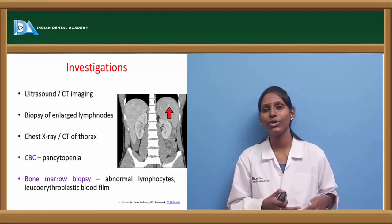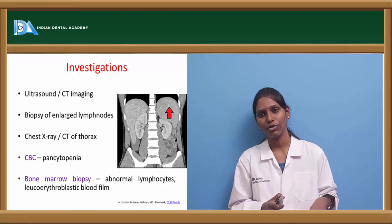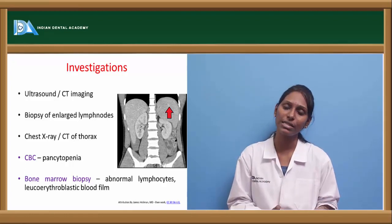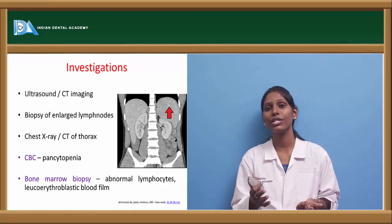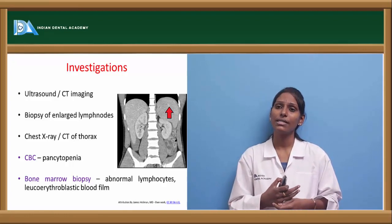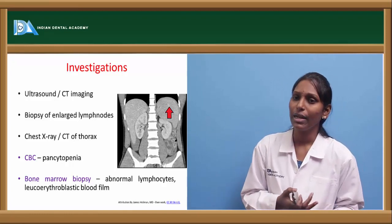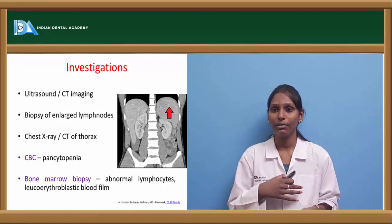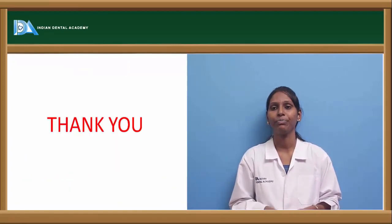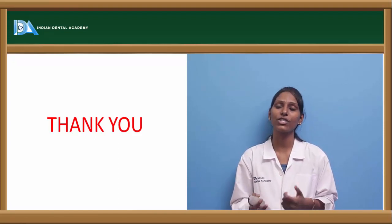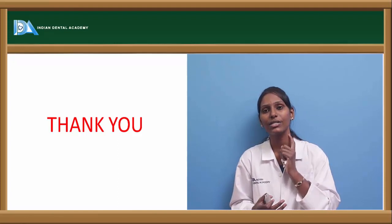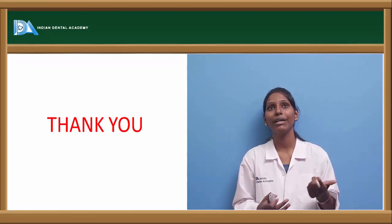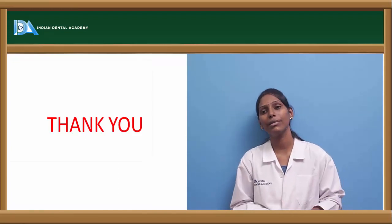Coming to investigations for splenomegaly — the spleen is normally not palpable, but in splenomegaly, physical examination reveals it is palpable. Other investigations include ultrasound and CT imaging, biopsy of enlarged lymph nodes, chest X-ray or CT thorax for mediastinal lymph node enlargement, and complete blood picture showing pancytopenia. Bone marrow biopsy usually reveals abnormal lymphocytes and leukoerythroblastic blood film. Splenomegaly is a manifestation of underlying conditions; treating those conditions will relieve the patient. In severe splenomegaly further leading to anemia, splenectomy is usually advised.